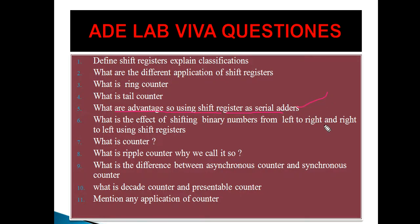What is the effect of shifting binary numbers left or right? When the content is shifted to the left, the number gets multiplied. When the content is shifted to the right, the number gets divided. For example, take the number 1000, which equals 8. If you shift it to the right, it becomes 0100, which equals 4. So shifting right divides the number, and shifting left multiplies it.